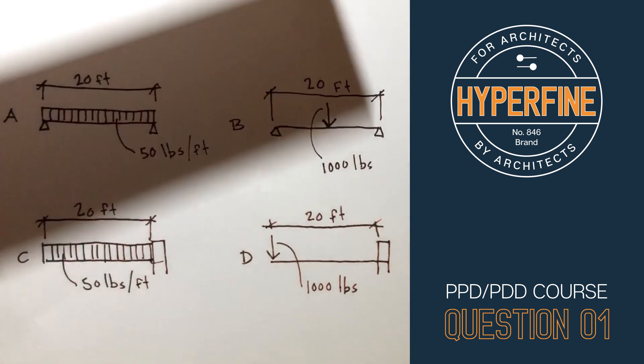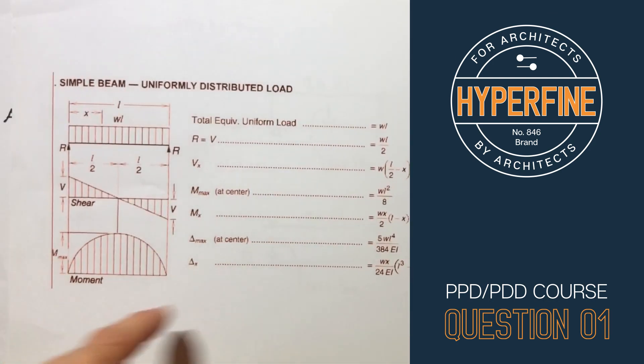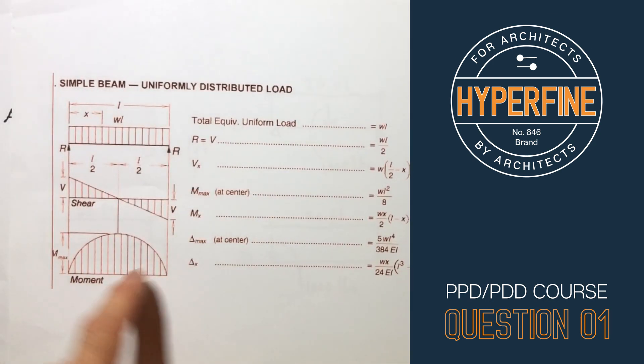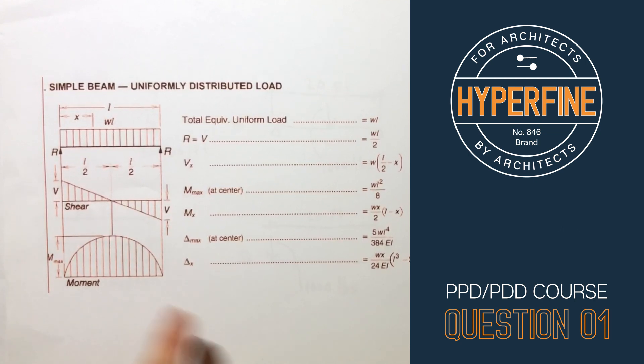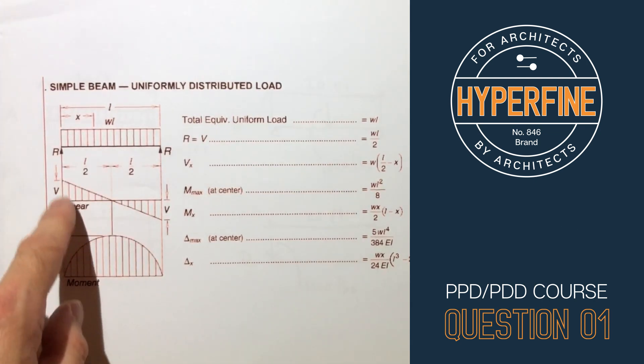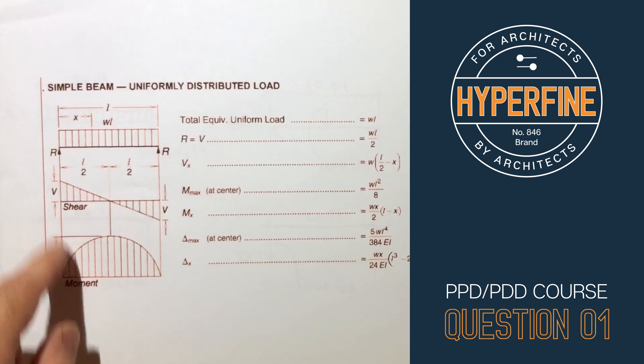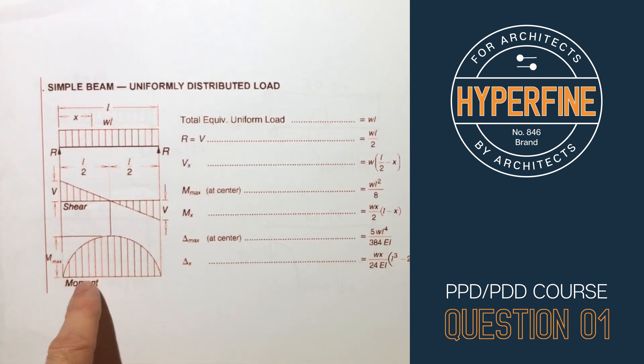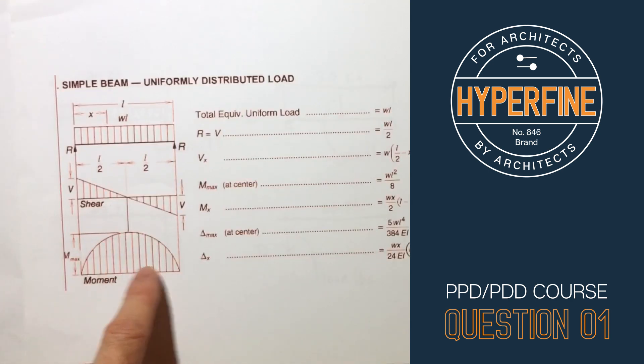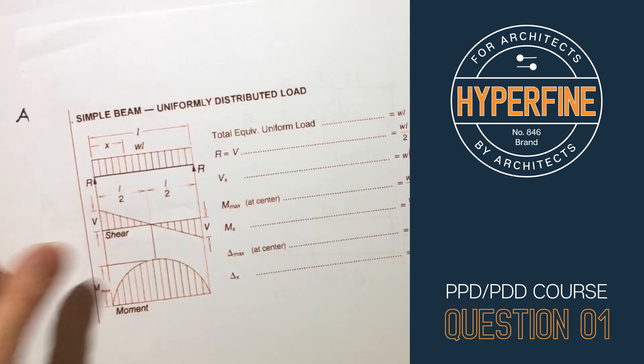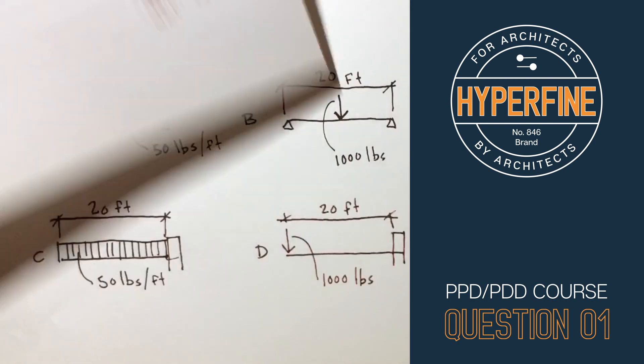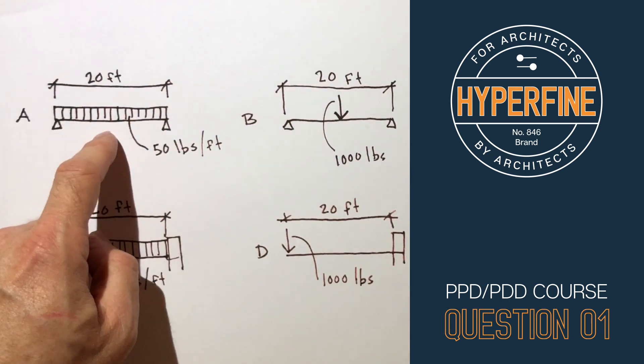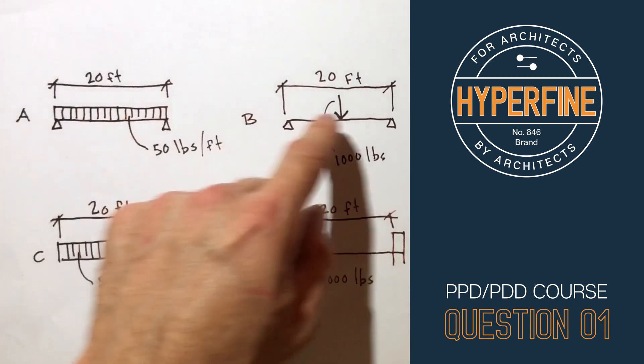These diagrams are all basically traced over these free body diagrams which you might be familiar with. They provide what the loading is, what the max moment is, what the shear is, and all the formulas for easily solving this. So instead of having to find the area under this semicircle you can just go straight to the formula. You don't have to memorize these things but you should have a basic understanding that a uniformly distributed load will have a lower bending moment than a point load.